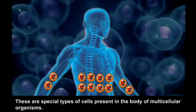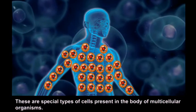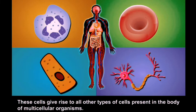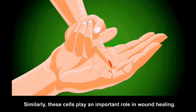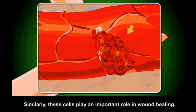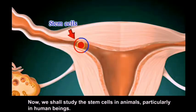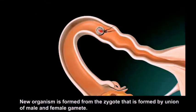Stem cells are a special type of cell present in the body of multicellular organisms. These cells give rise to all other types of cells present in the body. Stem cells also play an important role in wound healing. We studied stem cells of plants in the previous class; now we shall study stem cells in animals, particularly in human beings.